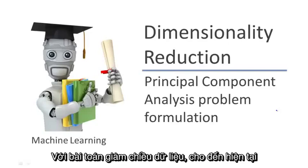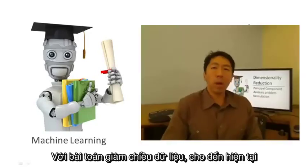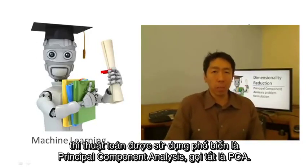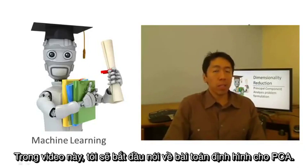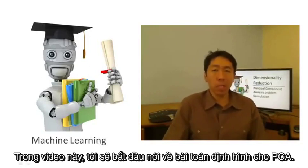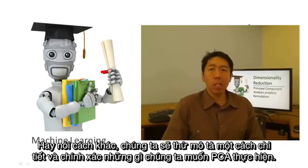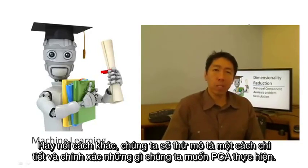For the problem of dimensionality reduction, by far the most popular and most commonly used algorithm is something called principal components analysis, or PCA. In this video, I'd like to start talking about the problem formulation for PCA. In other words, let's try to formulate precisely exactly what we would like PCA to do.